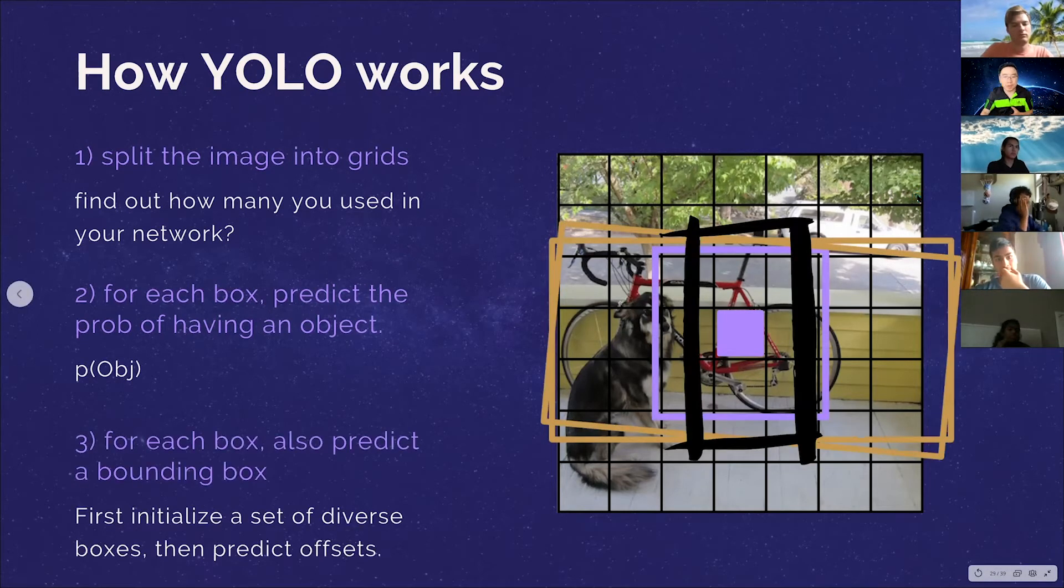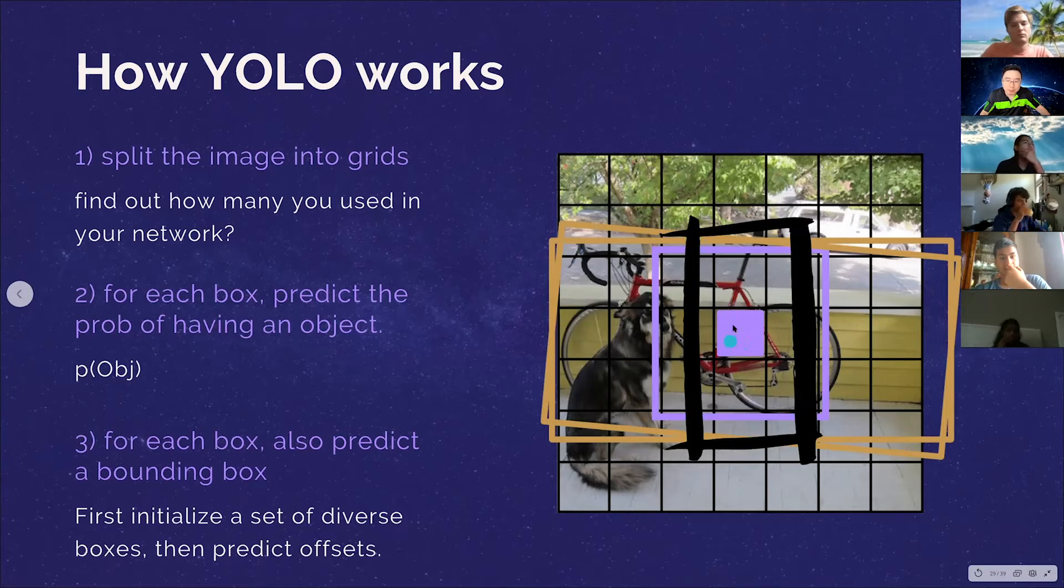And then for each of these box, then you see these like different boxes. So these boxes are called anchor box. So for each of these box, what are we going to do is we basically say, okay, maybe this one has some object, has some object. If that's the case, then what are we going to do is for each of these box, we're going to propose a few anchor boxes.